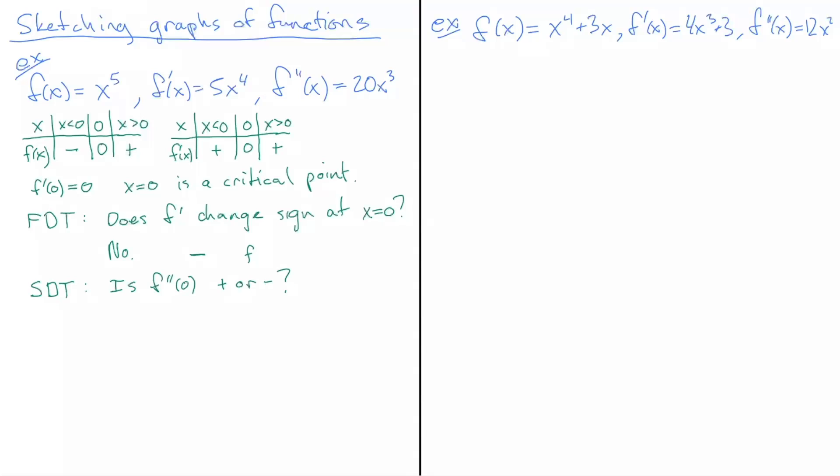Why would we ask that? If we calculate f''(0), in this case it equals zero. What does f'' mean? For example, if it were positive and f'(0) = 0, f'' being positive means the f' value (the slope) has to be increasing, because when you take a function's derivative, the sign tells you whether the original function is increasing or decreasing.